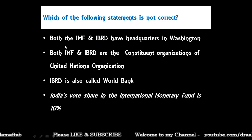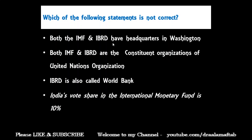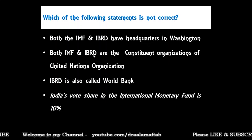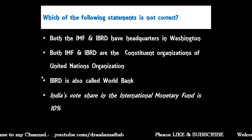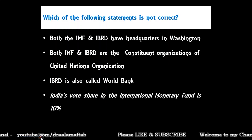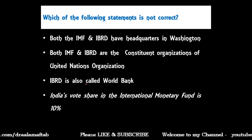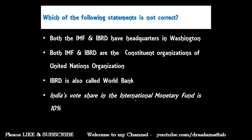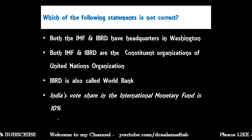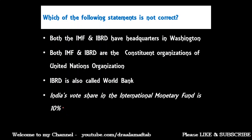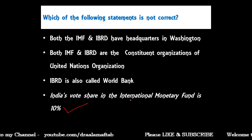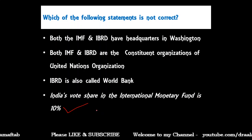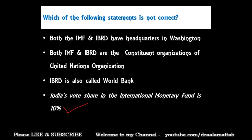Next: which of the following statements is not correct — both IMF and IBRD have headquarters in Washington, both are constituent organizations of the United Nations, IBRD is also called the World Bank, or India's vote share in the IMF is 10 percent? The correct answer is the last one — India's vote share in the IMF is not 10 percent, it is 2.76 percent. The first three statements are correct.